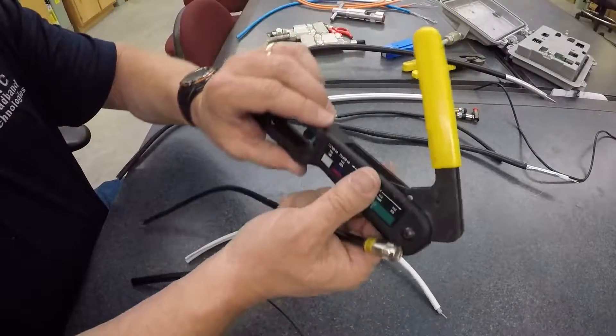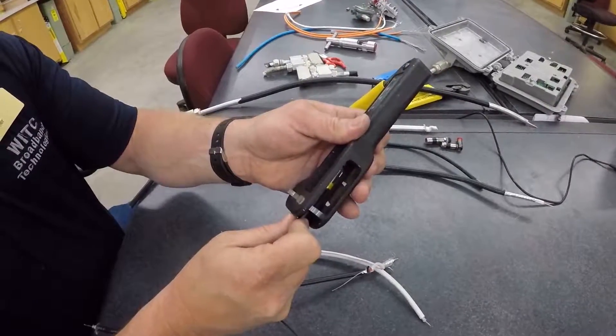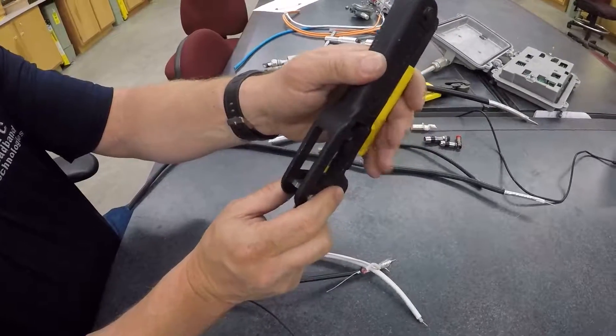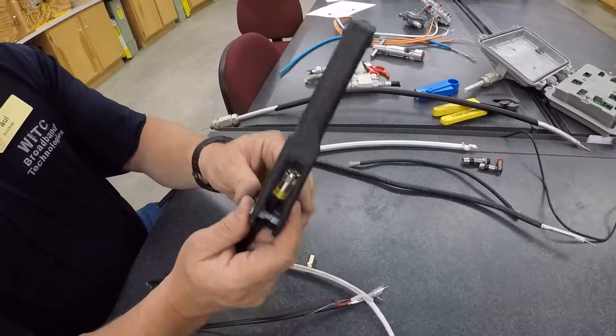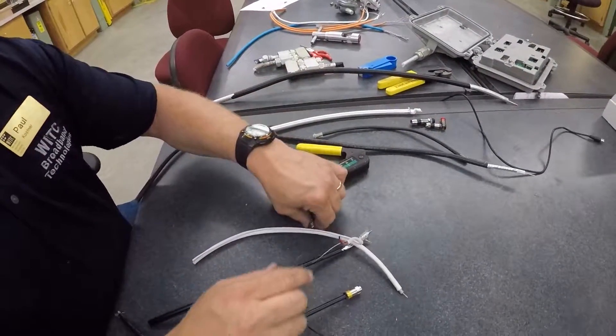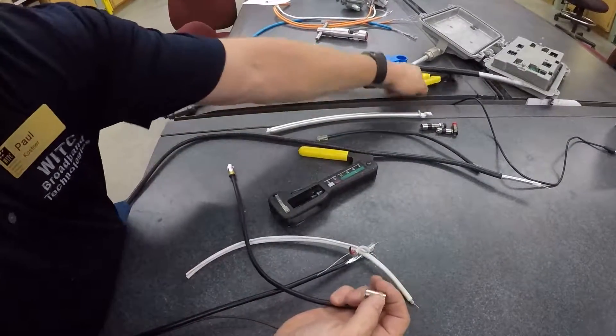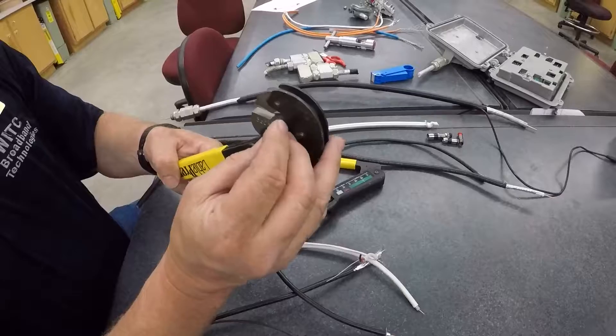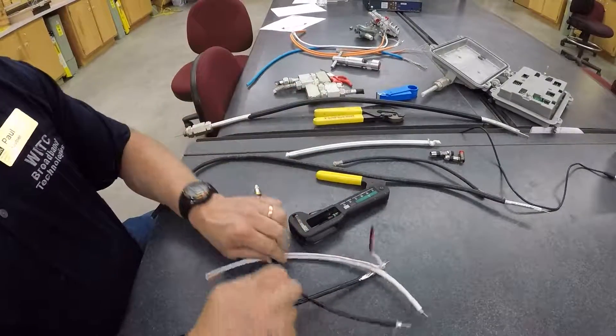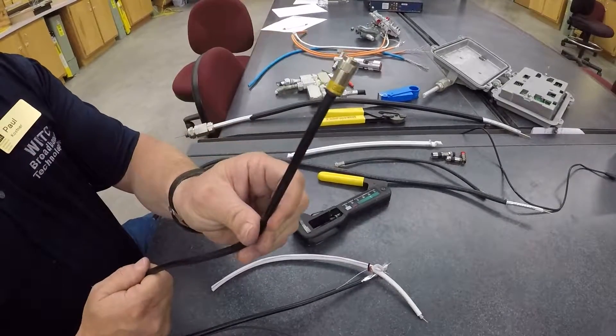Compression tools look like this. Your cable goes in like so, and then you compress it, and that makes that connection so that this doesn't come off at all. This type of connector is called the crimp. So this could go on this end, and instead of the compression, you put it in here, and you crimp it, and that would keep this on just like this connector as well. Those are two types of connectors for your drop cables.